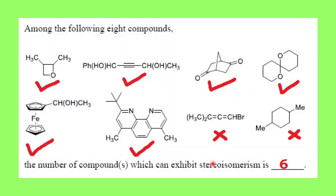Let us see the results. Out of the total eight compounds, the first six molecules showed stereoisomerism whereas the last two were optically inactive and hence do not show stereoisomerism. So the correct answer is six.